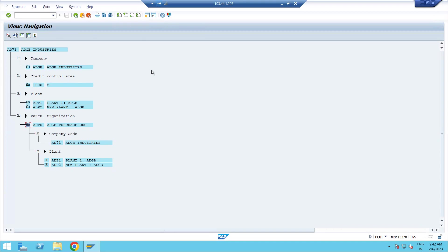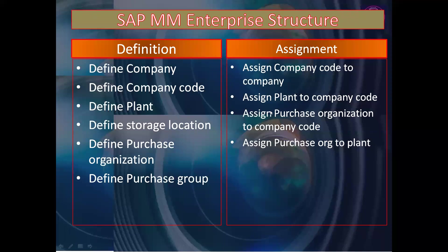When working in a project, along with MM we can also see the sales structure, as everything is assigned with the company code — whether sales data or purchase data. From the FI side there are parameters like controlling area, and from the finance side there are sales organization, sales area, and other details. So we have now completed SAP MM enterprise structure end-to-end in this S4 HANA system. If you have any doubts or questions, please text me or put your comment. Thank you everyone, thanks for joining the session.